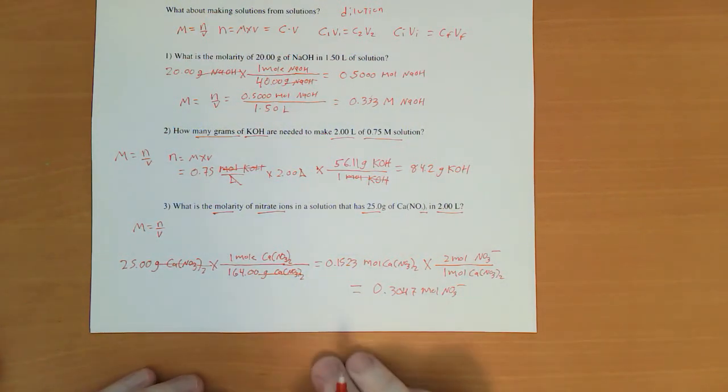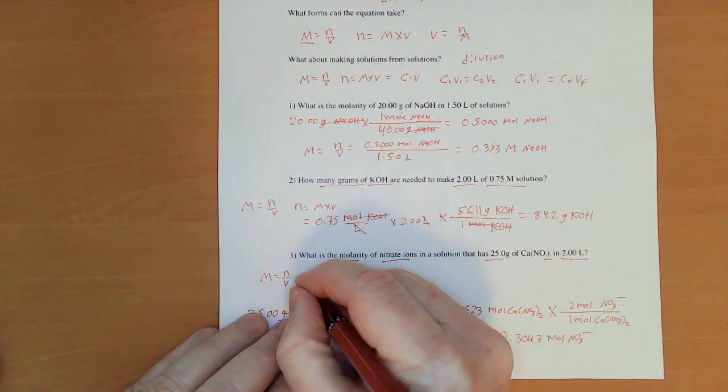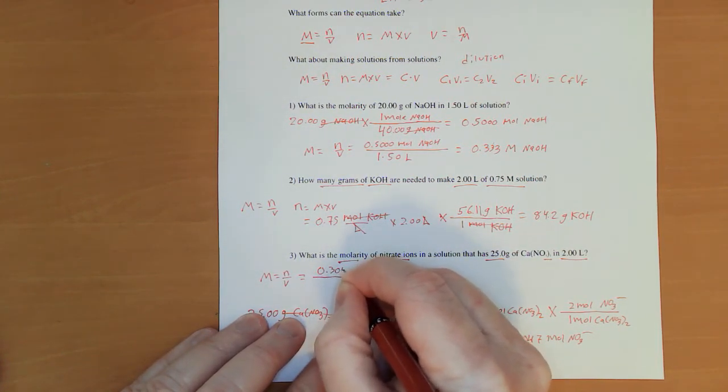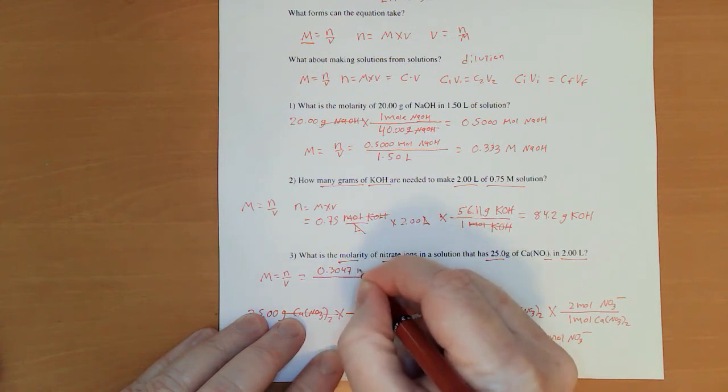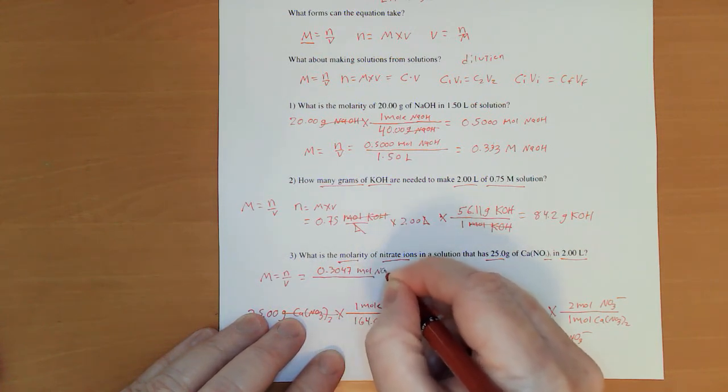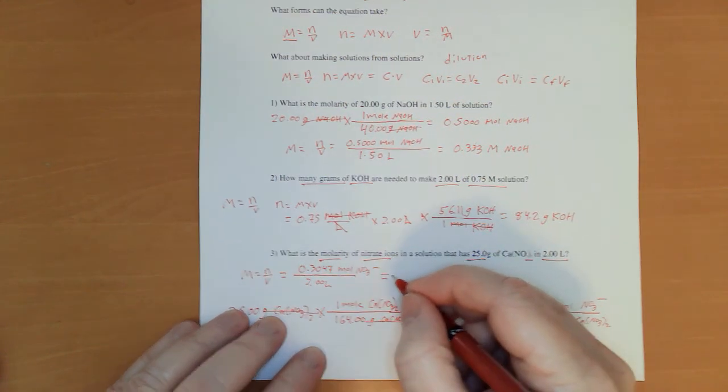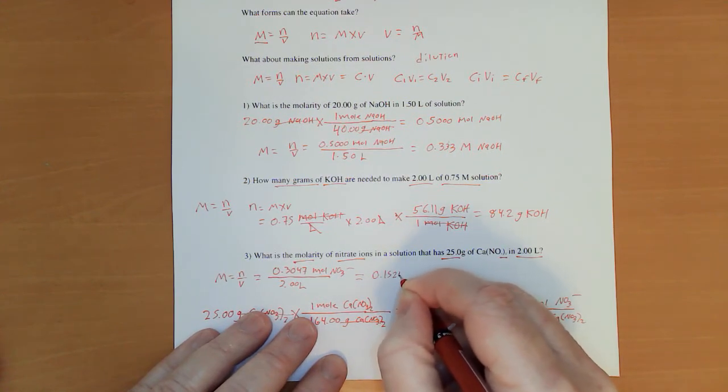So I can come back over here and take my 0.3047 moles nitrate, divide by my 2.00 liters and that equals 0.1524.